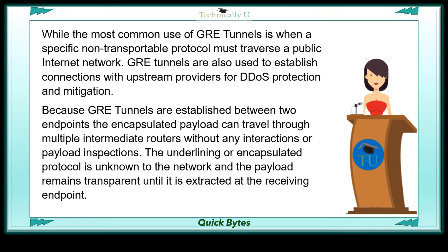GRE tunnels are also used to establish connections with upstream providers for DDoS protection and mitigation. Because GRE tunnels are established between two endpoints, the encapsulated payload can travel through multiple intermediate routers without any interactions or payload inspections. The underlying or encapsulated protocol is unknown to the network and the payload remains transparent until it is extracted at the receiving endpoint.